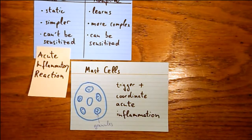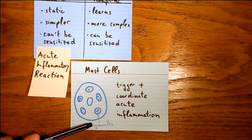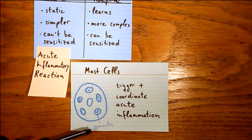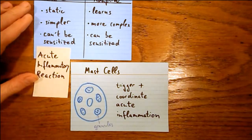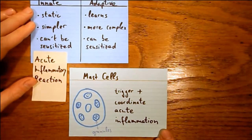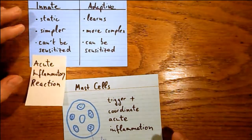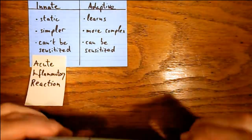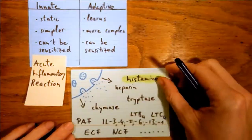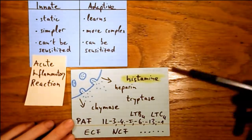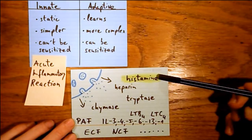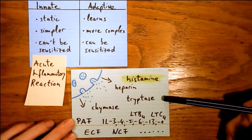Mast cells keep most of their mediators in ready-packed granules, so when they get activated, they just release them — this process is called degranulation. Among other things, they send out histamine, heparin, and tryptase.